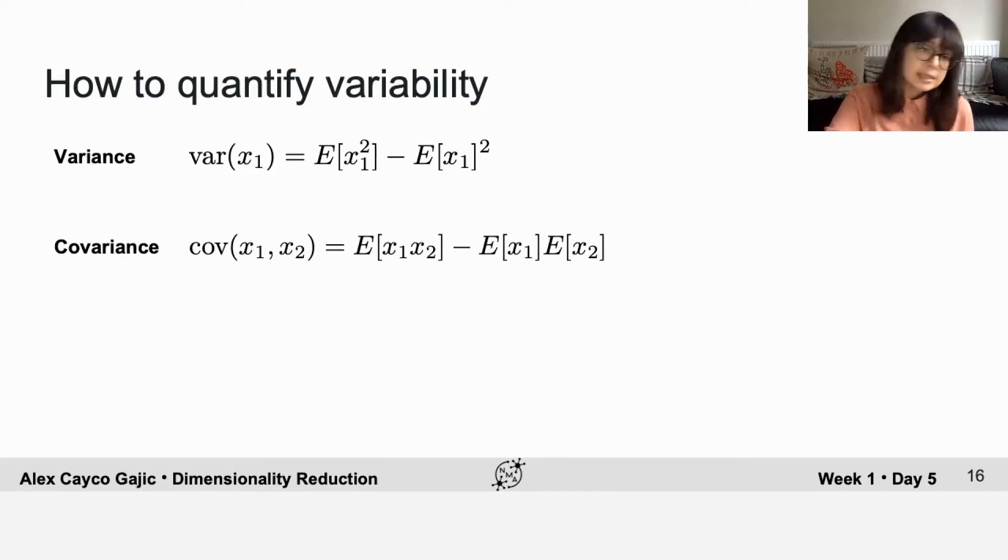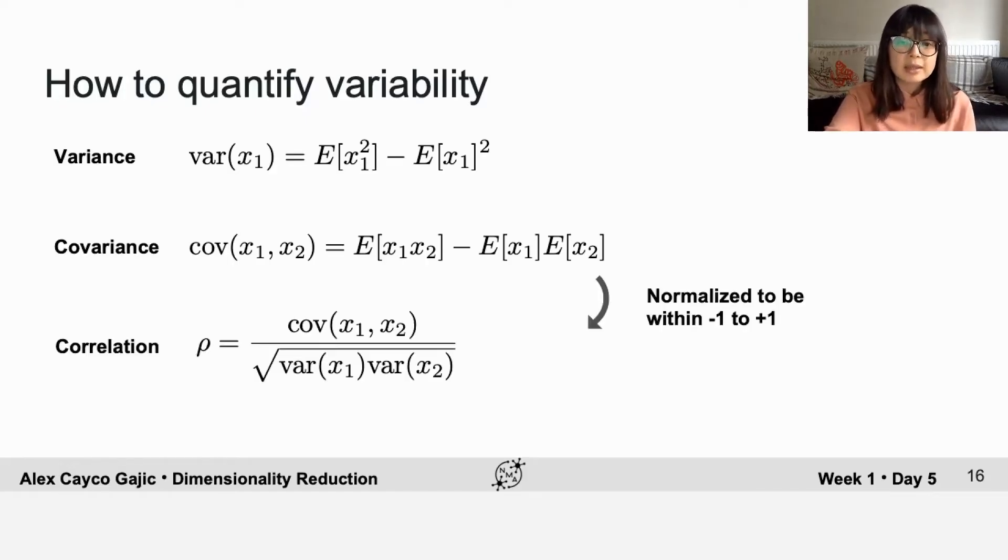The covariance is in slightly weird units because if you measure the firing rates in hertz, then the covariance would be in hertz squared. So you can get rid of this weird unit by dividing by the product of the standard deviations. And this also normalizes this quantity to be within minus one and plus one. We call this the correlation coefficient.